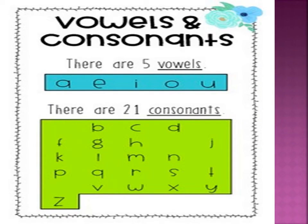Now, we divide this alphabet into two parts: vowels and consonants. There are 5 vowels — A, E, I, O, U — and 21 consonants, which are given in the green box.